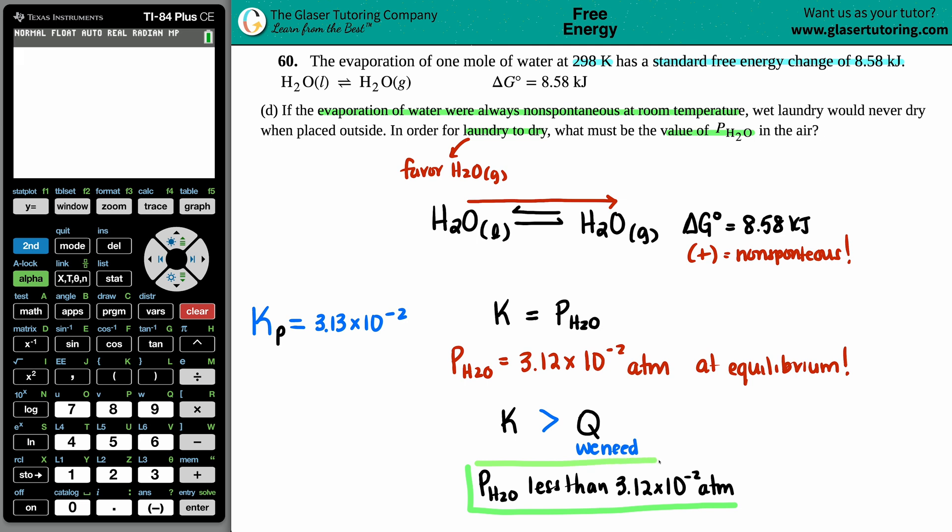So there is your answer. For all conditions in which the pressure of H2O in the air is less than 3.12 times 10 to the negative 2 atm, your laundry is going to dry. But however, anything that's at equilibrium and above, it's going to be soaking wet, so hopefully you bring it inside.